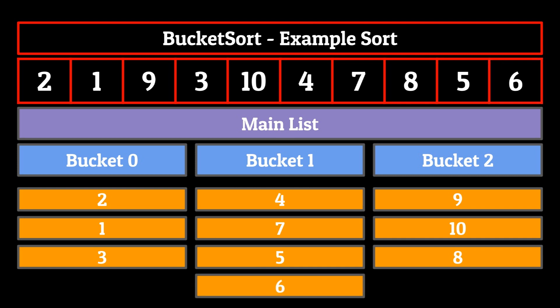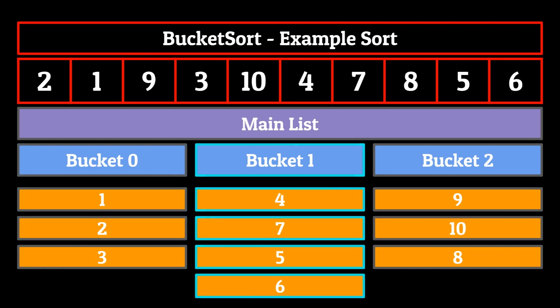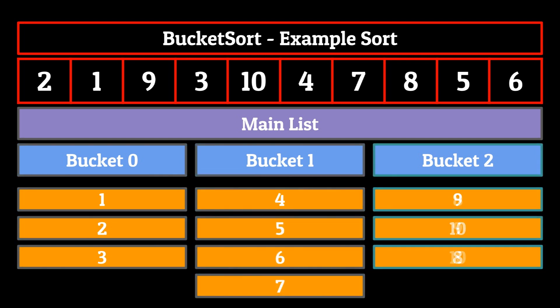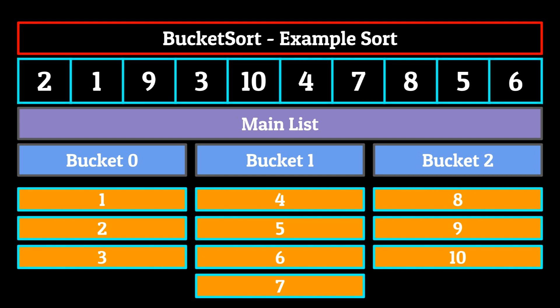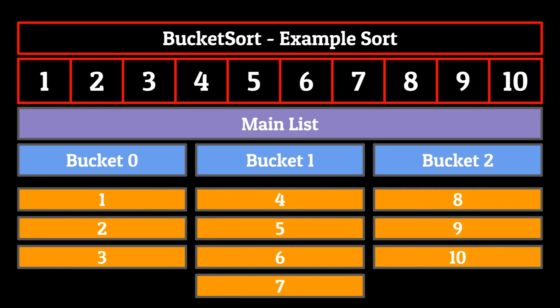As you can see, we have three buckets, each with three to four elements in it. From here, we can perform a simple selection sort on bucket zero, bucket one, and finally bucket two. If we empty each of our buckets back into the original list, we have ourselves a sorted list.